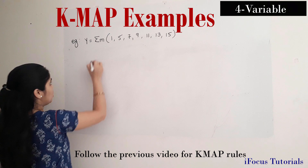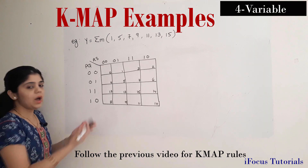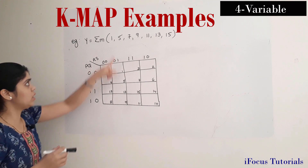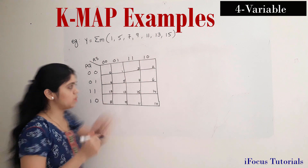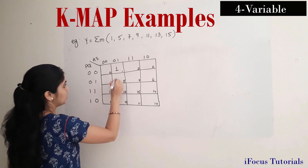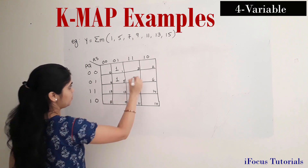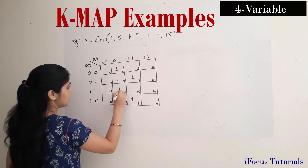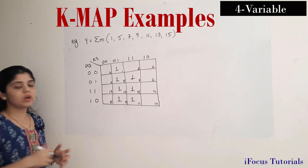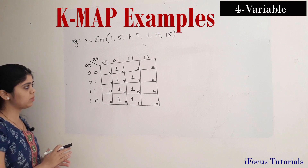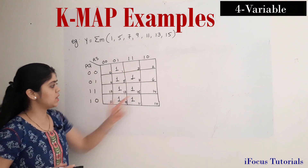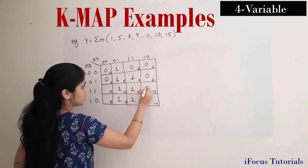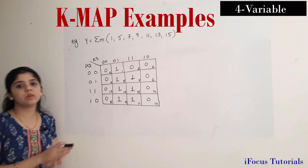Now I will draw a 4-variable K map according to the rules. I will fill a 1 in the respective box numbers: 1, 5, 7, 9, 11, 13, and 15. To avoid confusion with a 4-variable K map, we can fill the remaining boxes with 0. In the previous example also I could fill with 0, but if you don't have any confusion, you can keep it as it is.